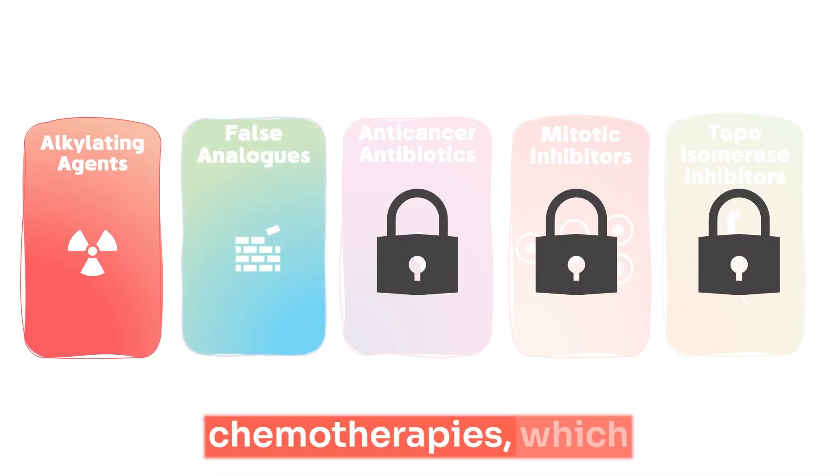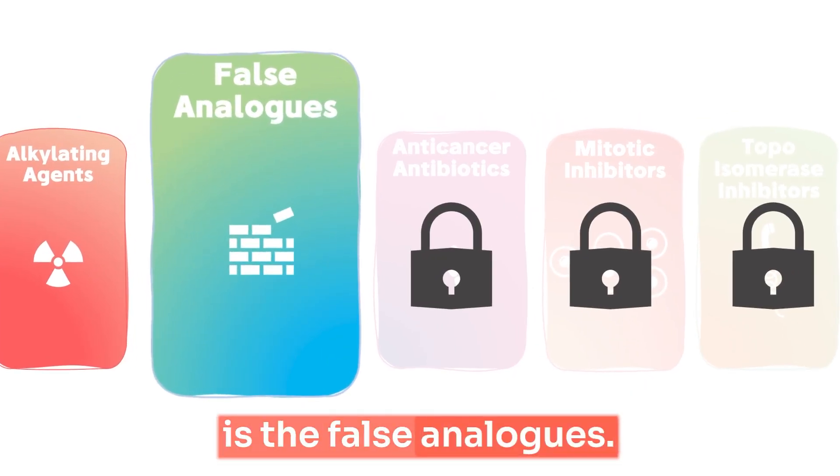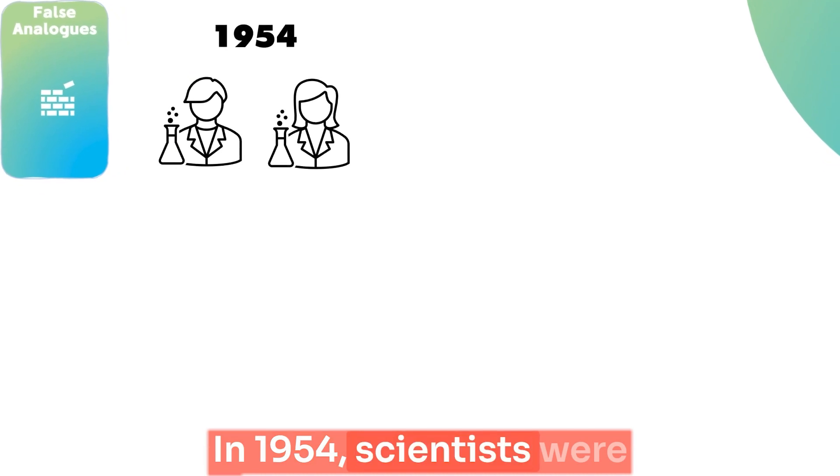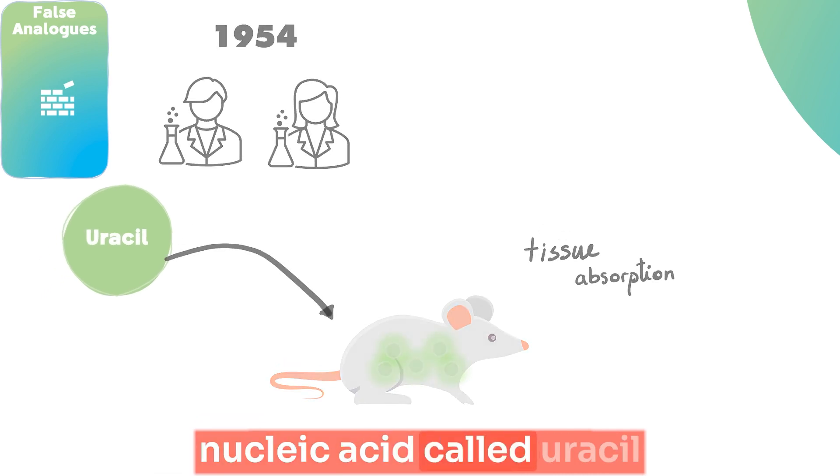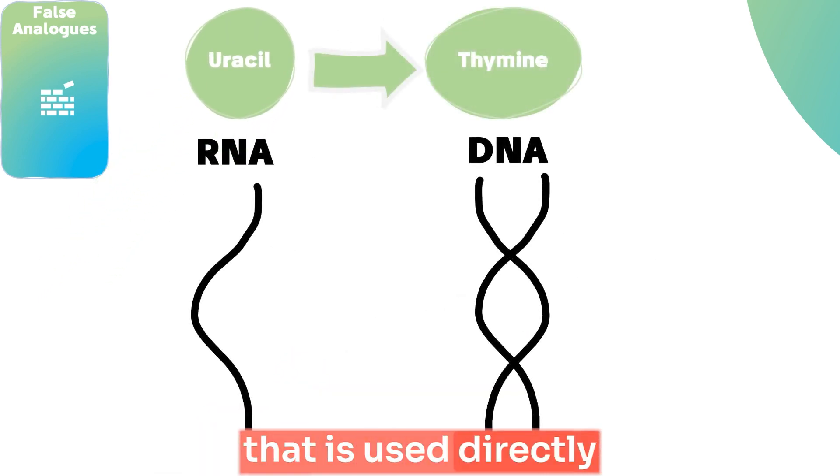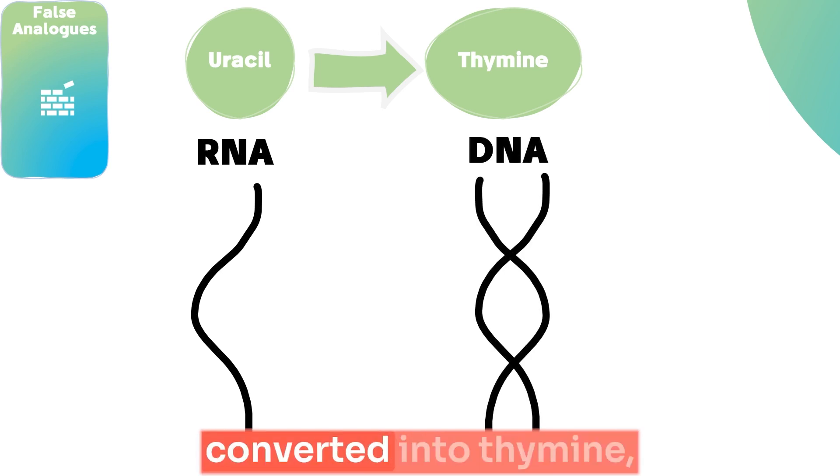Now, let's move to the next type of chemotherapies, which is the false analogues. In 1954, scientists were exploring which tissue will have the highest absorption rate of a nucleic acid called uracil that is used directly in RNA synthesis and indirectly in DNA synthesis after it gets converted into thymine.